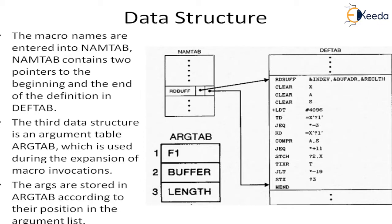Looking at the definition table, it contains the macro name 'RDBUF'. That RDBUF is also contained in the name table, which stores the macro name with two entries: one for the starting of that particular macro and one for the ending. Within that definition, there are different arguments: the first is F1, which is stored in the argument table, then BUFFER, and the third one is LENGTH.